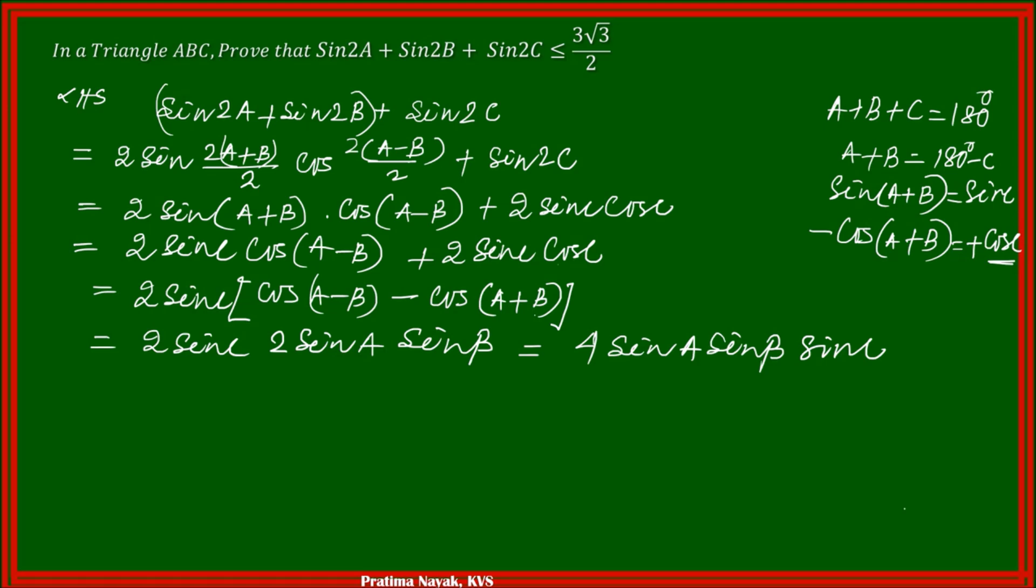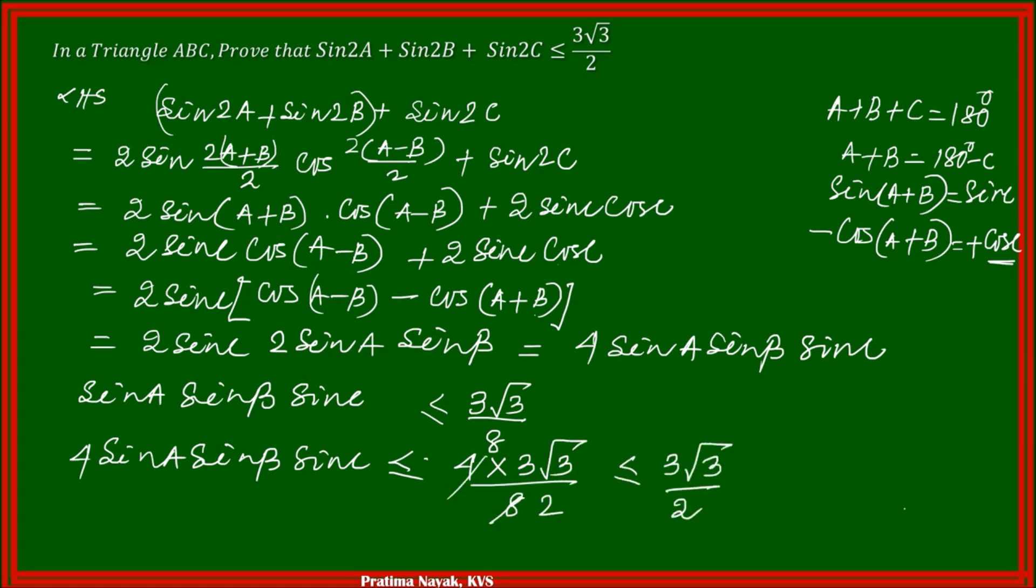Now let us recall a previous result. I had a video uploaded about this inequality. Sin A sin B sin C is less than or equal to 3 root 3 over 8. When I multiply by 4, it becomes 4 times 3 root 3 over 8, which equals 3 root 3 over 2. So hence it is proved.